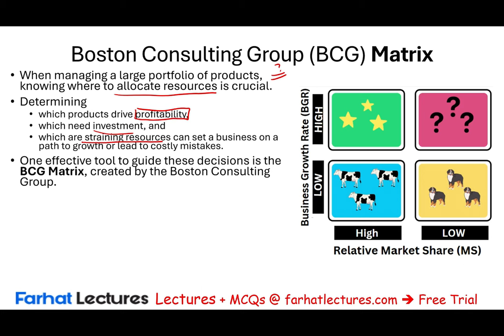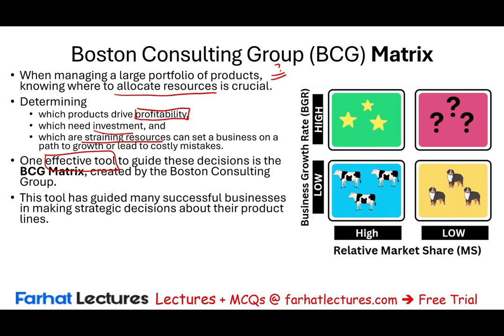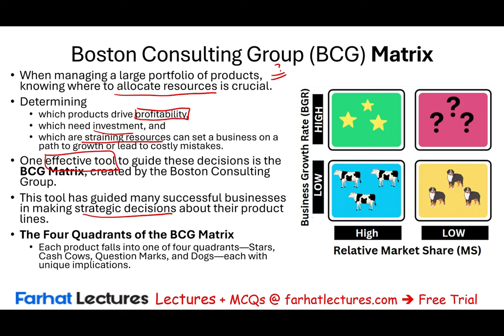The Boston Consulting Group matrix is an effective tool to help us make decisions. It has guided many successful businesses in making strategic decisions about their product line. There are four quadrants: Stars, Cash Cows, Dogs, and Question Marks. We need to understand each quadrant and how it fits into a company's strategic business plan.